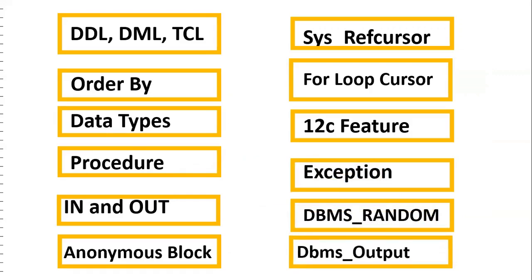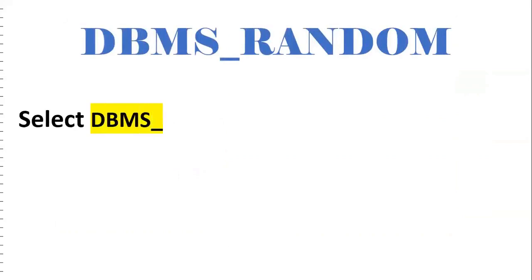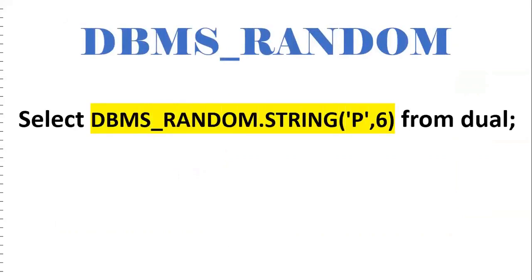Let us discuss some of the concepts — like DBMS_RANDOM. This is an Oracle pre-defined package. By using this package we can generate random values; it has many functions. One of the functions is the STRING function. For instance, it will generate a 6-character string that is a combination of alphabets, numbers, and special characters. If you have time, please explore the DBMS_RANDOM package.